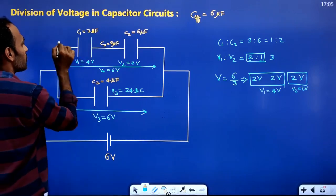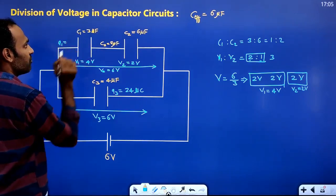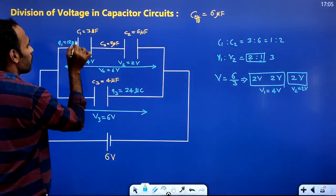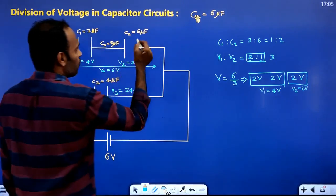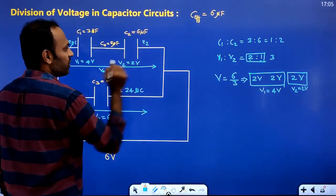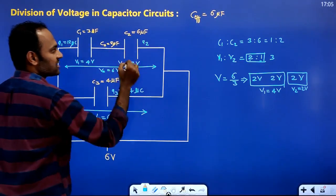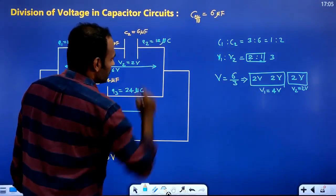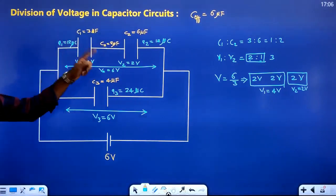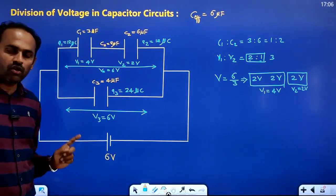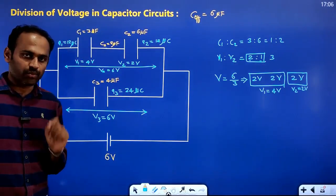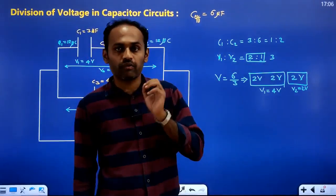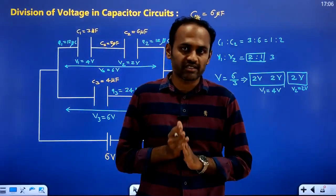For the charges: Q1 equals C1 times V1 equals 3 into 4 equals 12 microcoulombs. Q2 equals C2 times V2 equals 6 into 2 equals 12 microcoulombs. These are the charges on all three capacitors as well as the voltages on all three capacitors. This is how we use the voltage division method — one of the best methods to solve capacitor circuits.